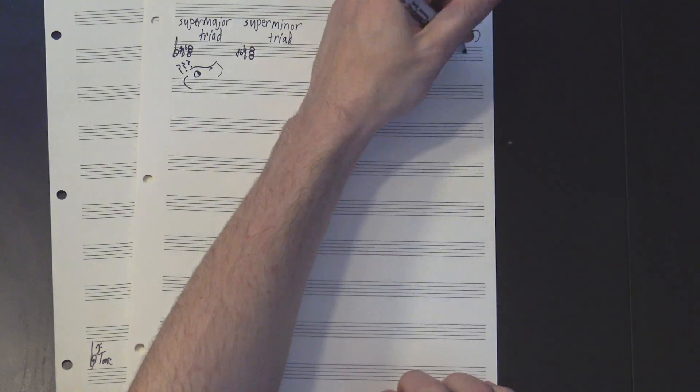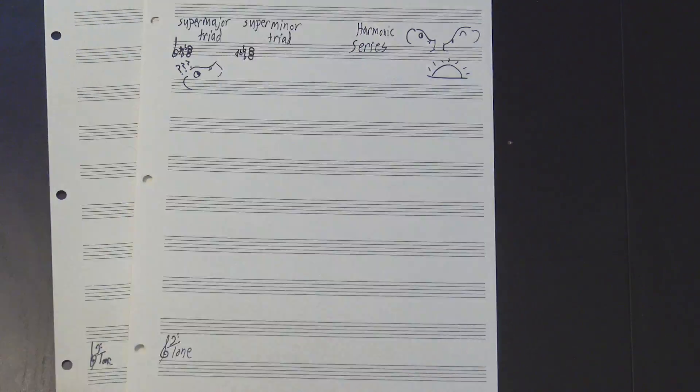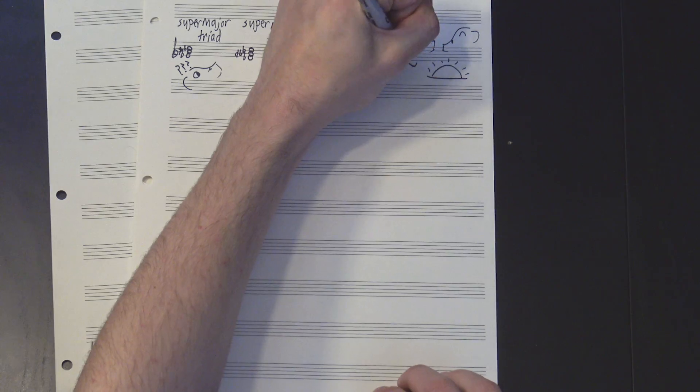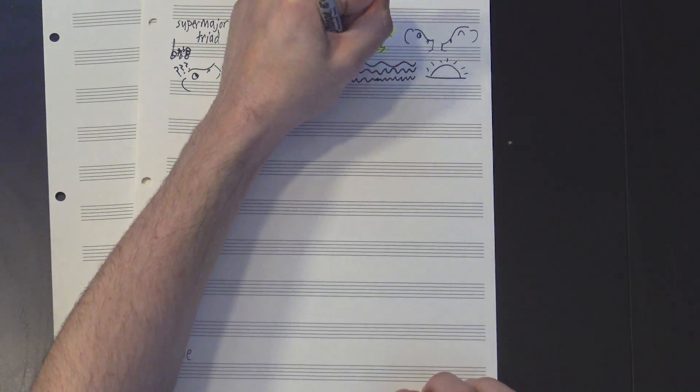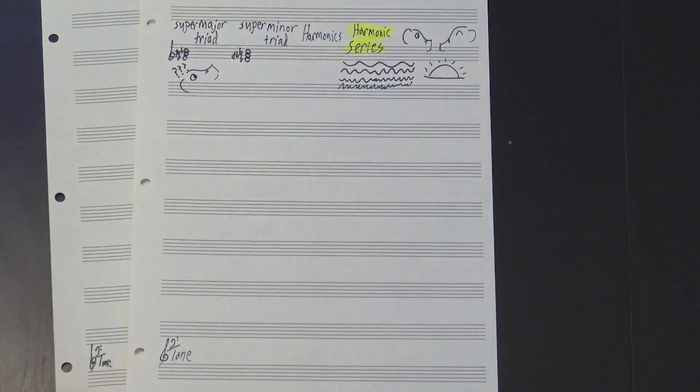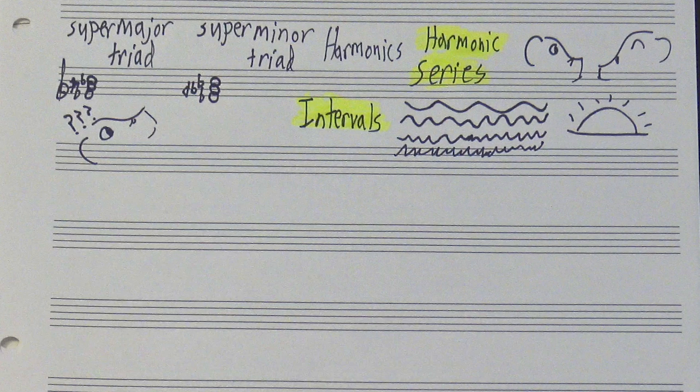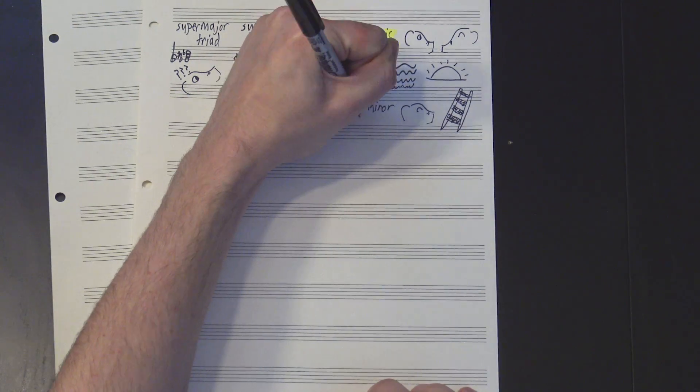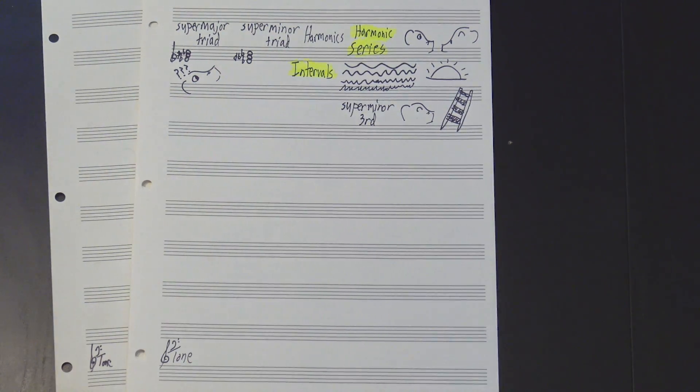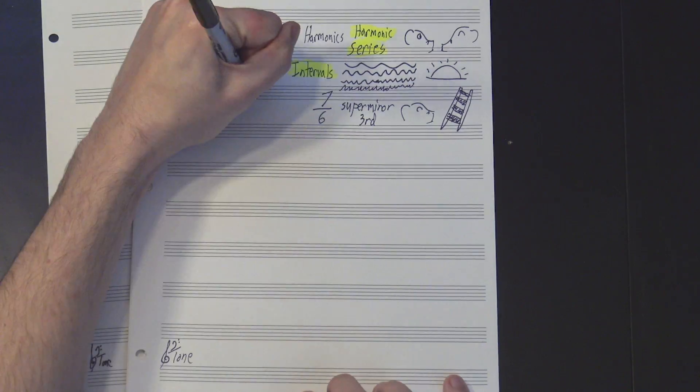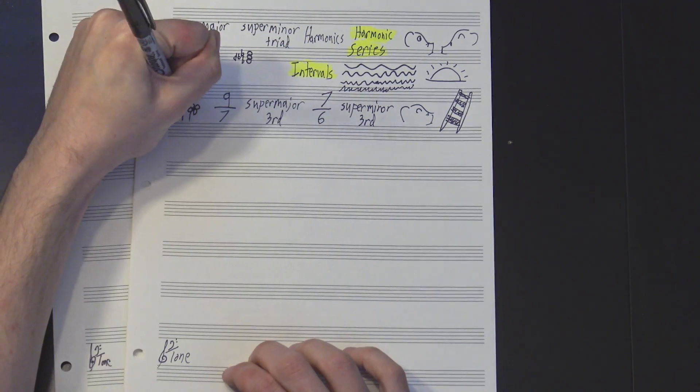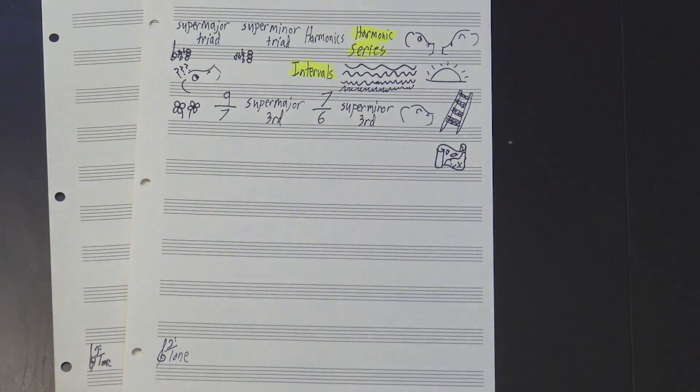So why do these work better? Well, that brings us back to our old friend the harmonic series. We've covered this before, but briefly, this is the idea that when you hear a pitch, you're also hearing all the multiples of that pitch, which we call harmonics. The intervals we use are approximations of these harmonics, and usually the lower down the series you can find them, the nicer they sound. The superminor third is fairly close to the distance between the 6th and 7th harmonics, and the supermajor third can be found between the 7th and 9th. This makes them both fairly pleasing, even if they're a little outside our comfort zones.